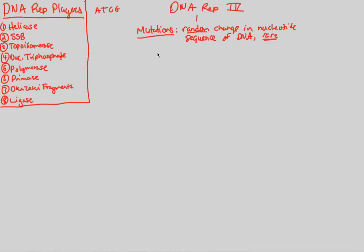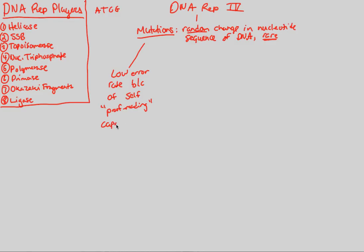Why are mutations rare? They're rare because of a low error rate, and technically a mutation is an error during replication. There's a low error rate because of what are called self-proofreading enzymes — literally, proofreading enzymes. It's a polymerase enzyme that has the ability to proofread, giving a low error rate because of self-proofreading capabilities during replication.